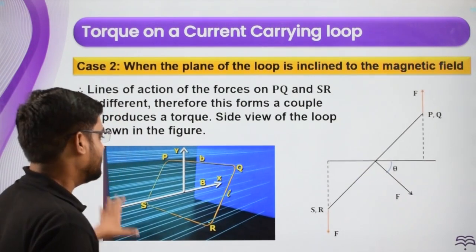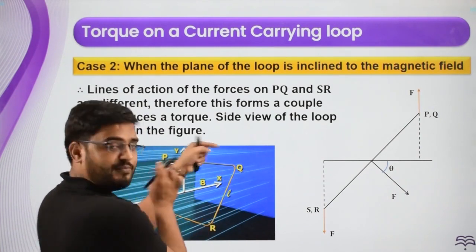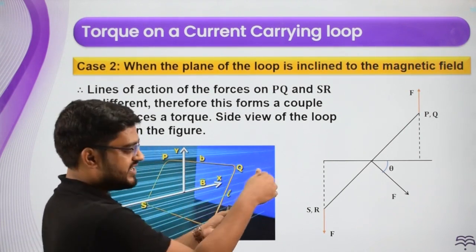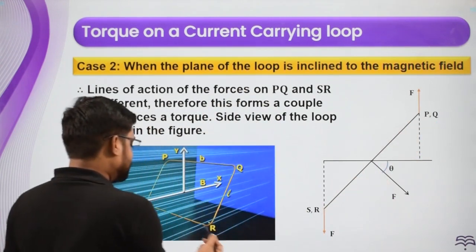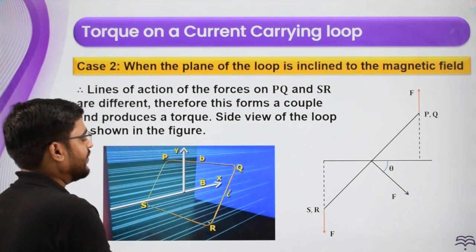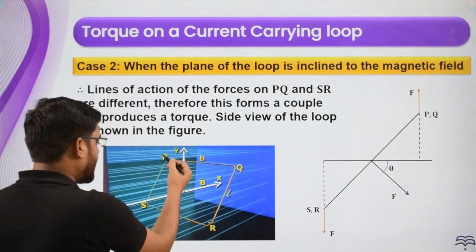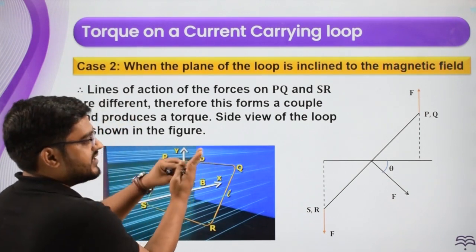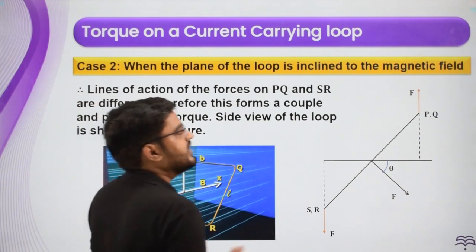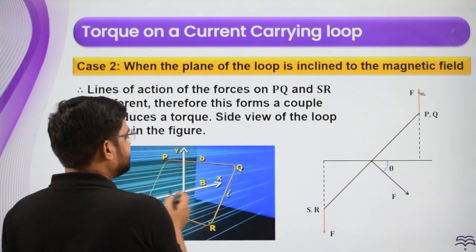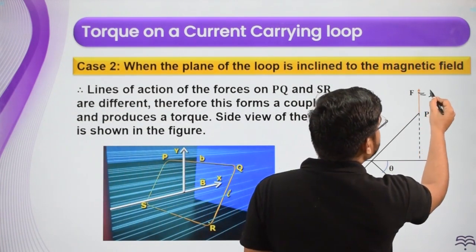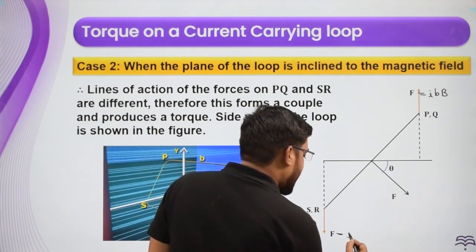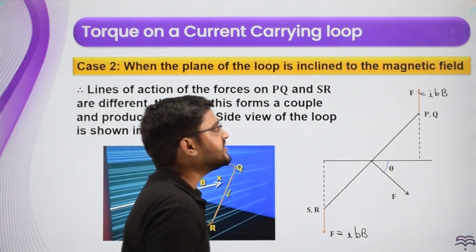I am making a side-view figure looking from this direction, so P and Q appear as the same point and the entire plane looks like a slightly tilted wire. The forces on QR and PS are equal, opposite, and act along the same line of action — so they produce no torque. But for PQ and SR, the force on PQ is upward with magnitude IbB, and an equal force acts downward on SR. These two forces form a couple with some distance between their lines of action.